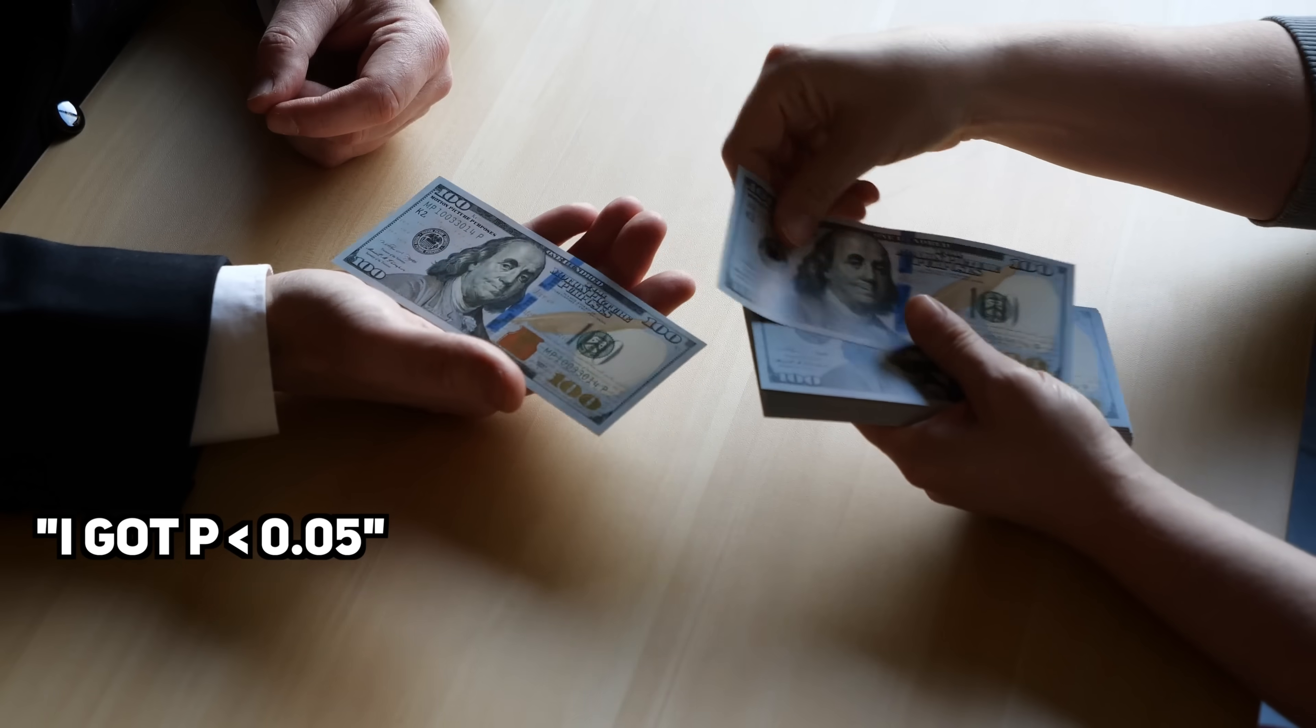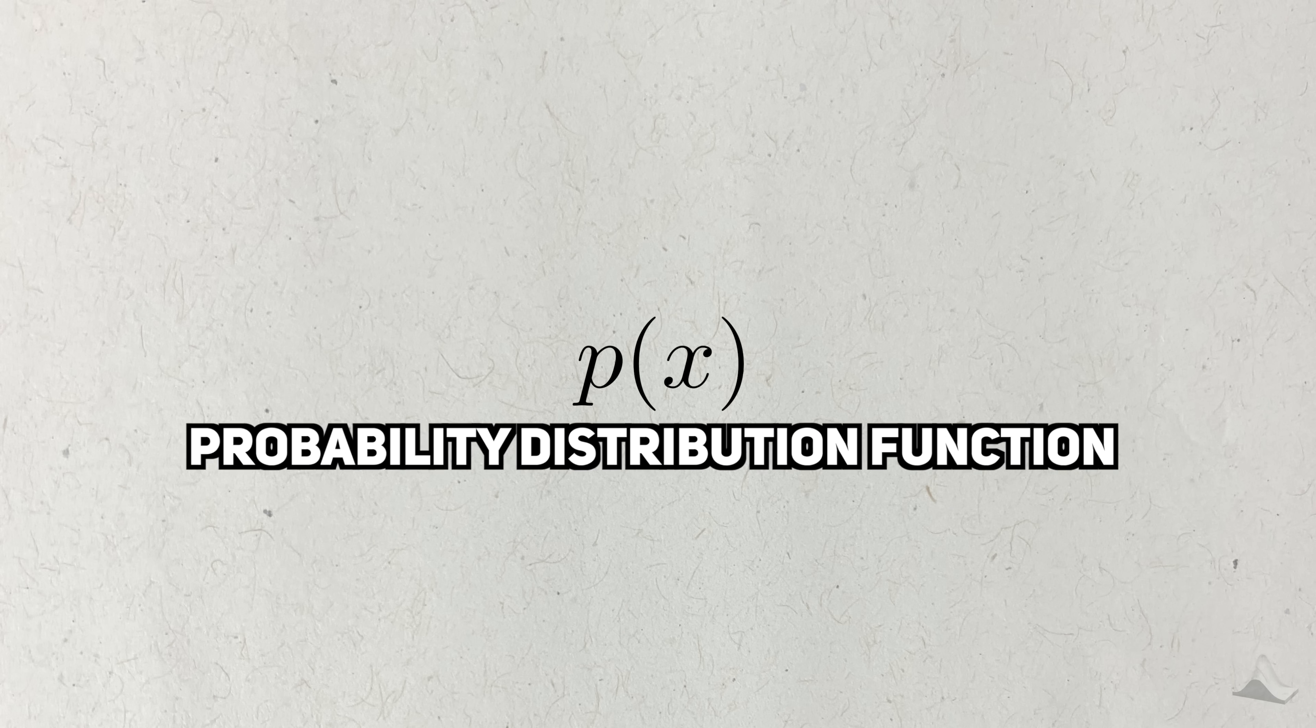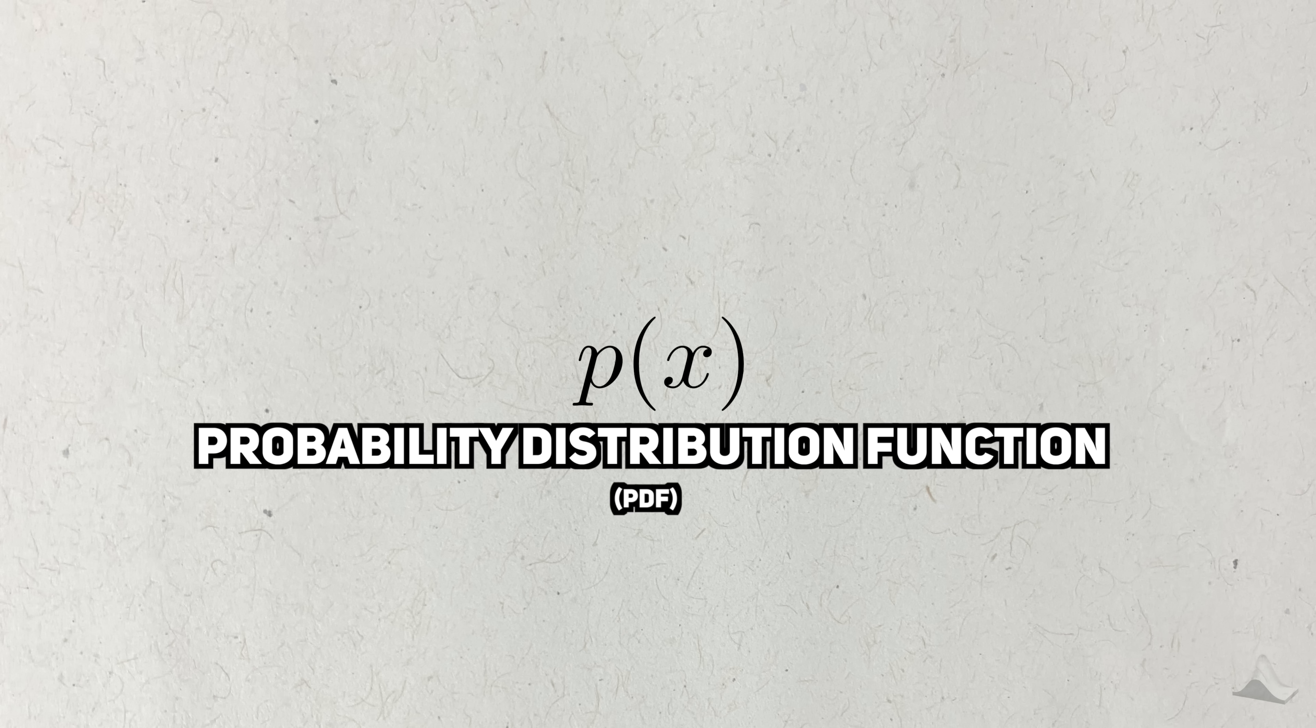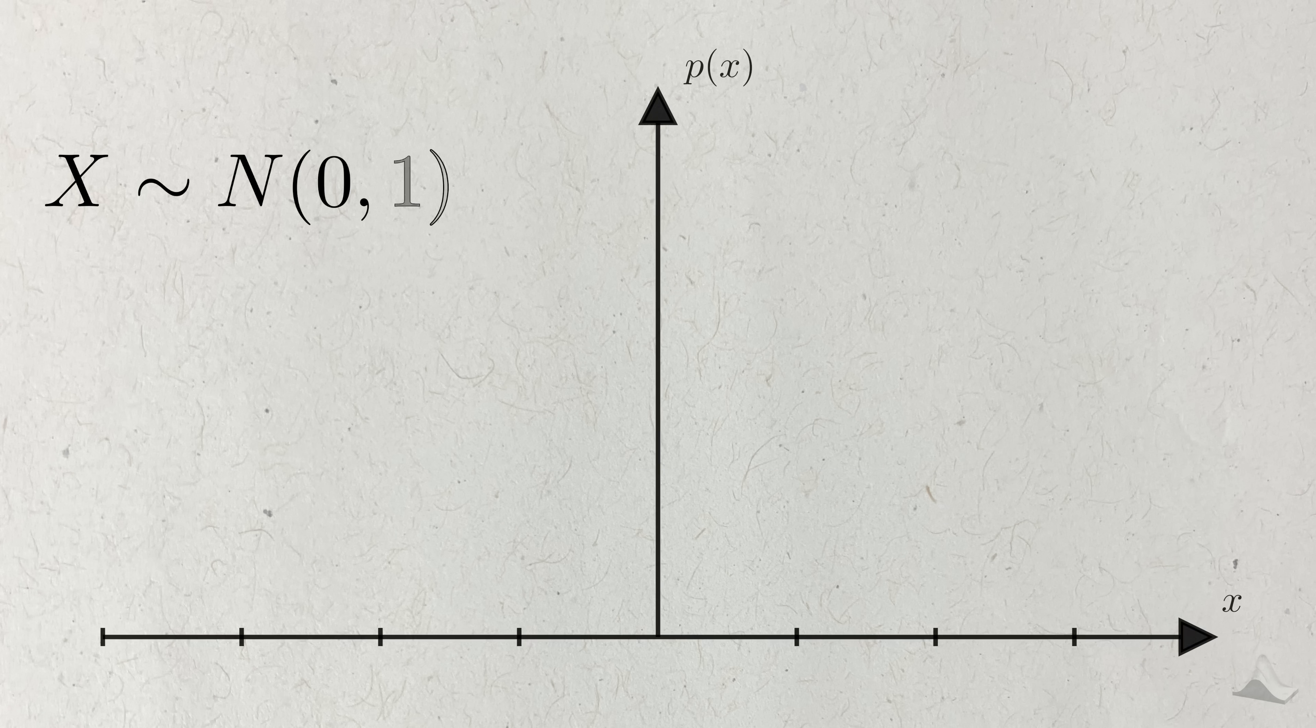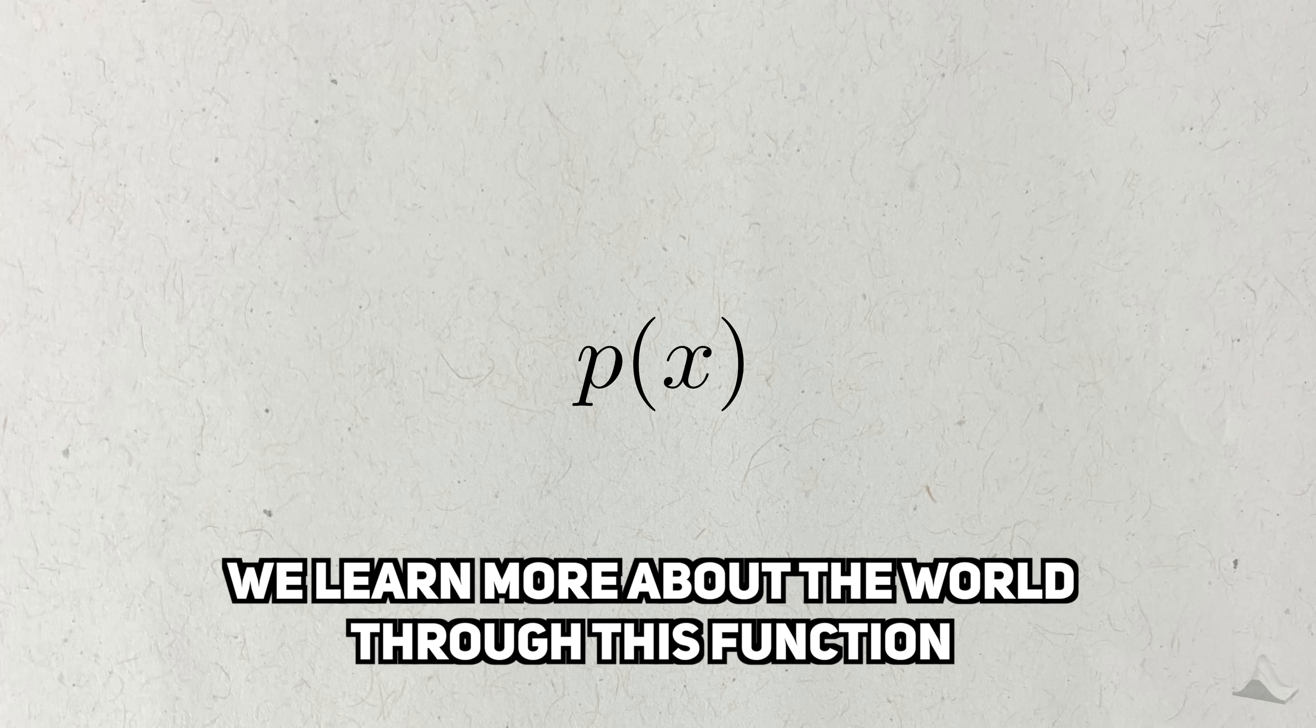We statisticians gotta get that bag, so we assume that this randomness has a predictable form or structure. We describe this structure using a probability distribution function, or PDF. PDFs are functions which describe which values we're most likely to see, which ones are rare, and which are impossible.